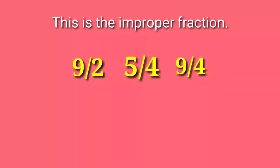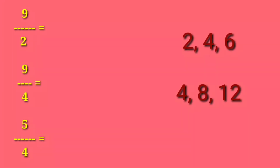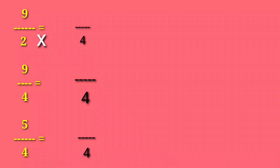Now we changed them into improper fractions. Let's find their common denominator — the common denominator of 2 and 4 is 4. Now let's figure out what the numerator is. For 9 over 2: multiply 2 by 2 to get 4, so do the same at the top. So 9 over 2 equals 18 over 4.